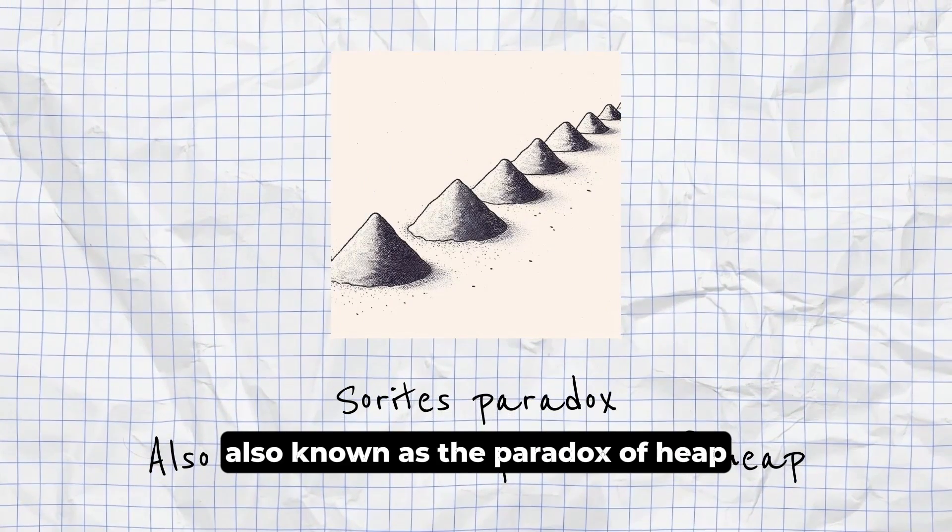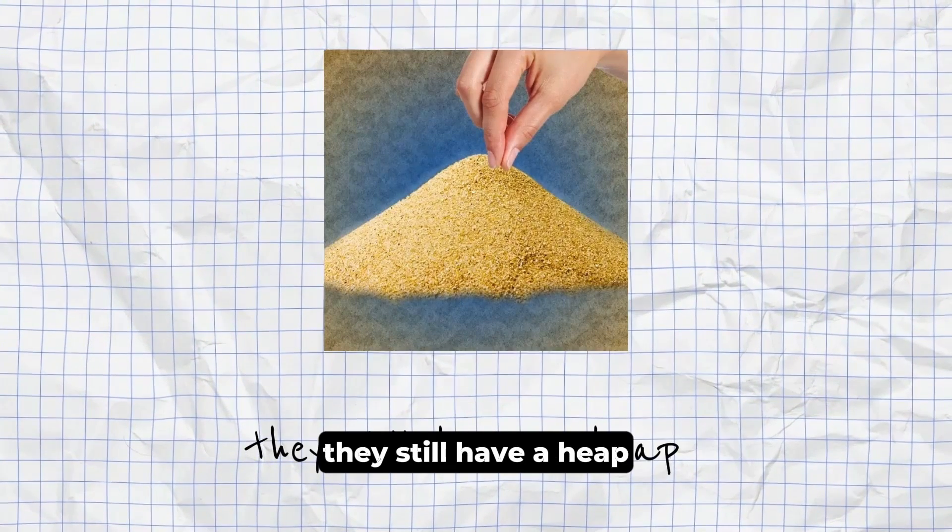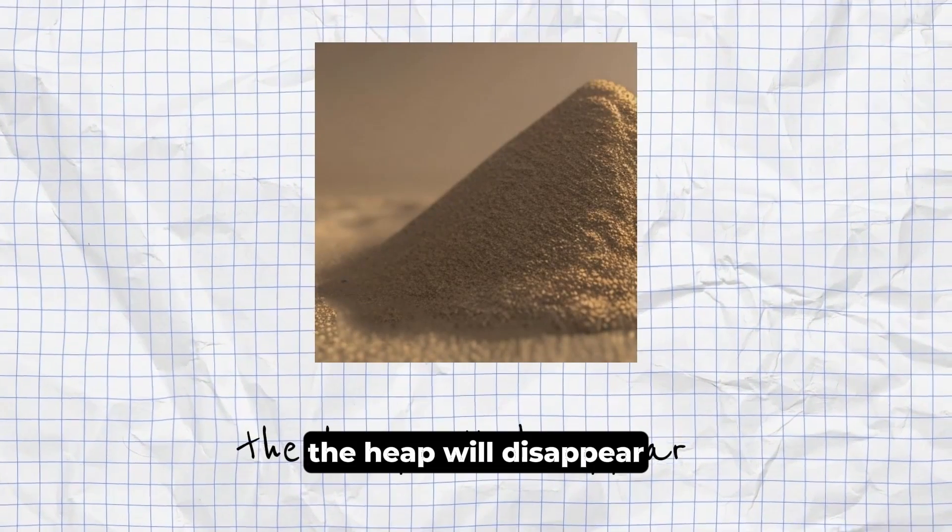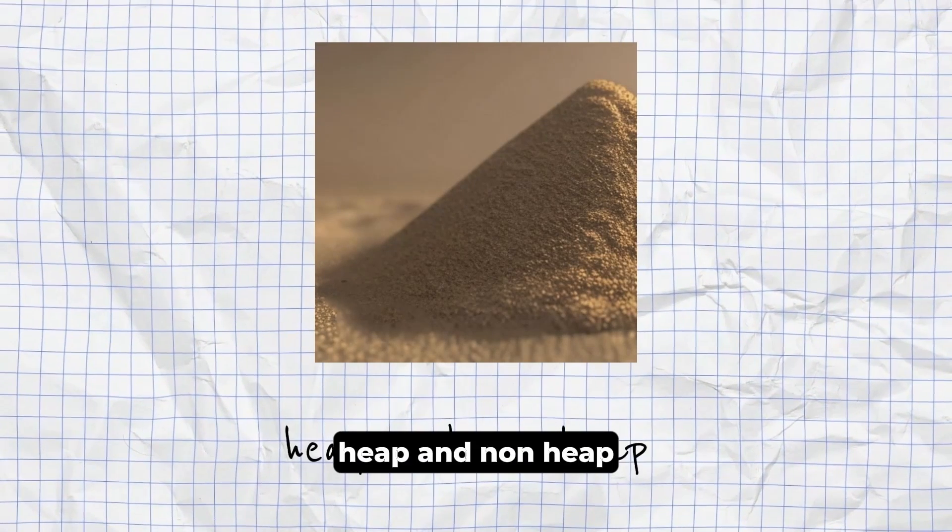Sorites Paradox, also known as the Paradox of Heap. If one removes a single grain of sand from a heap, they still have a heap. If they keep removing single grains, the heap will disappear. Can a single grain of sand make the difference between heap and non-heap?